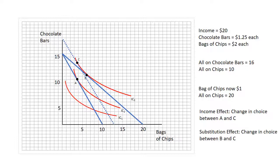You could say that the income effect is an increase in the consumption of chocolate bars going from 11 to around 13, so an increase of three chocolate bars, and no change in the number of bags of chips, so still around three and three quarters.